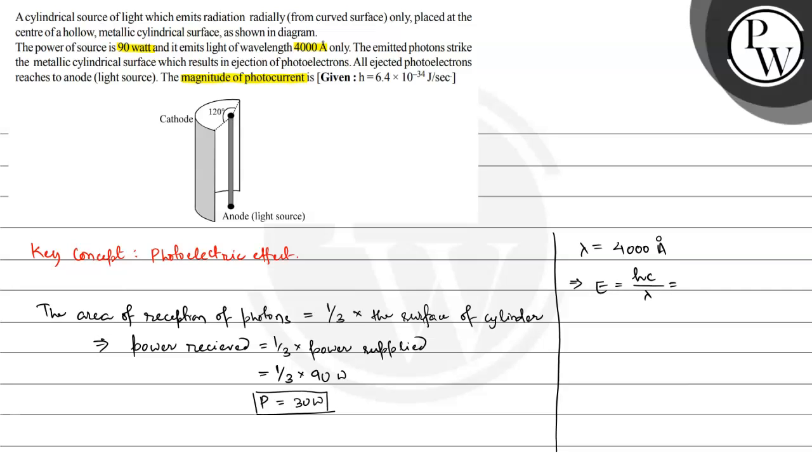So h is 6.4 multiplied by 10 raised to the power minus 34 joule second, multiplied by 3 into 10 raised to the power 8 meter per second, divided by the wavelength that is 4000 angstrom. And if we write this in meters, 4000 multiplied by 10 raised to the power minus 10 meters.